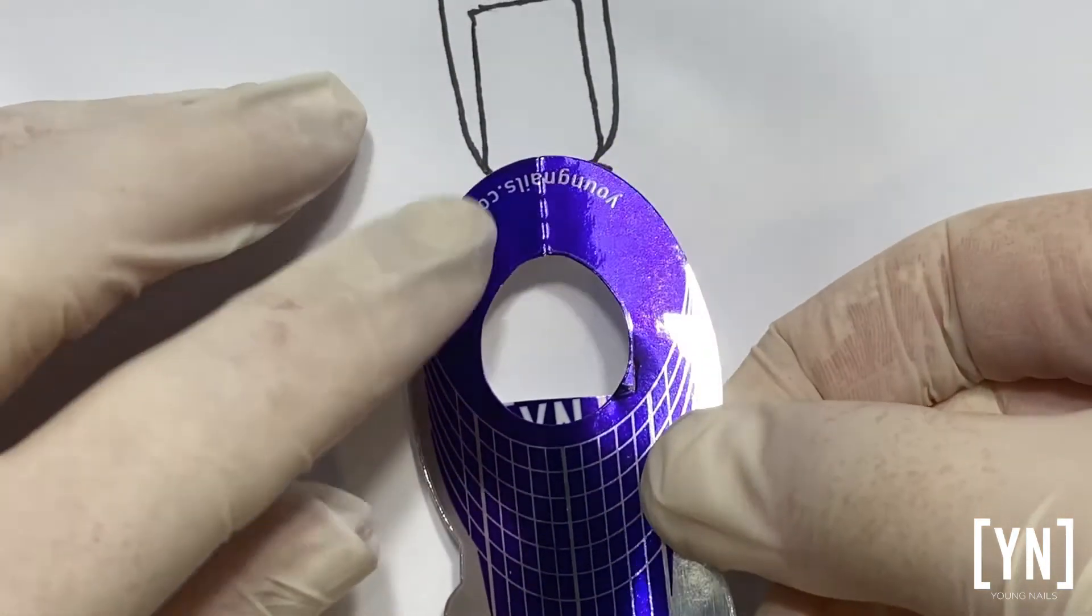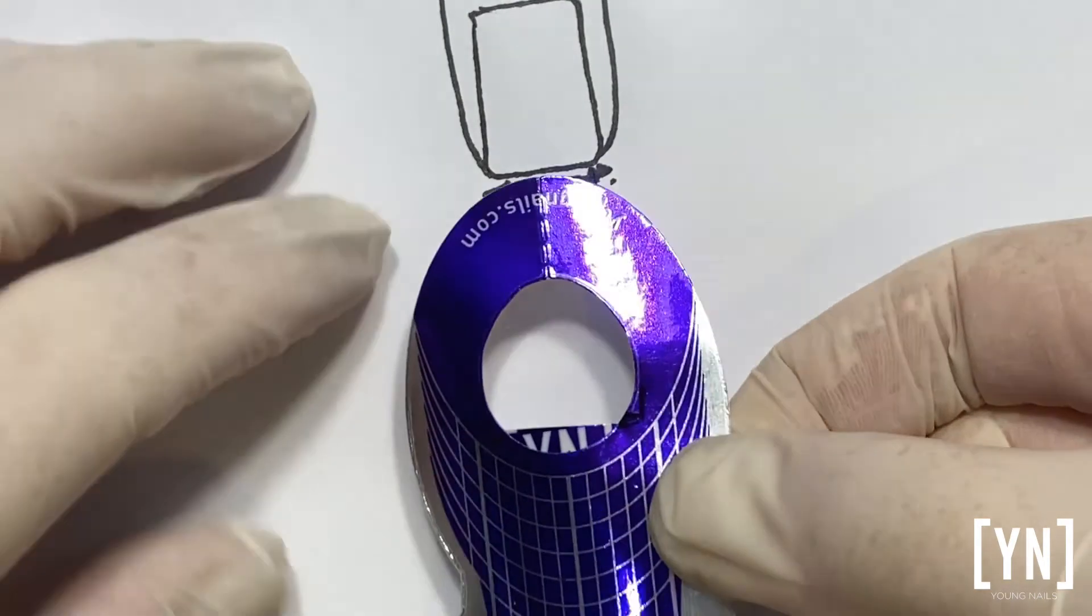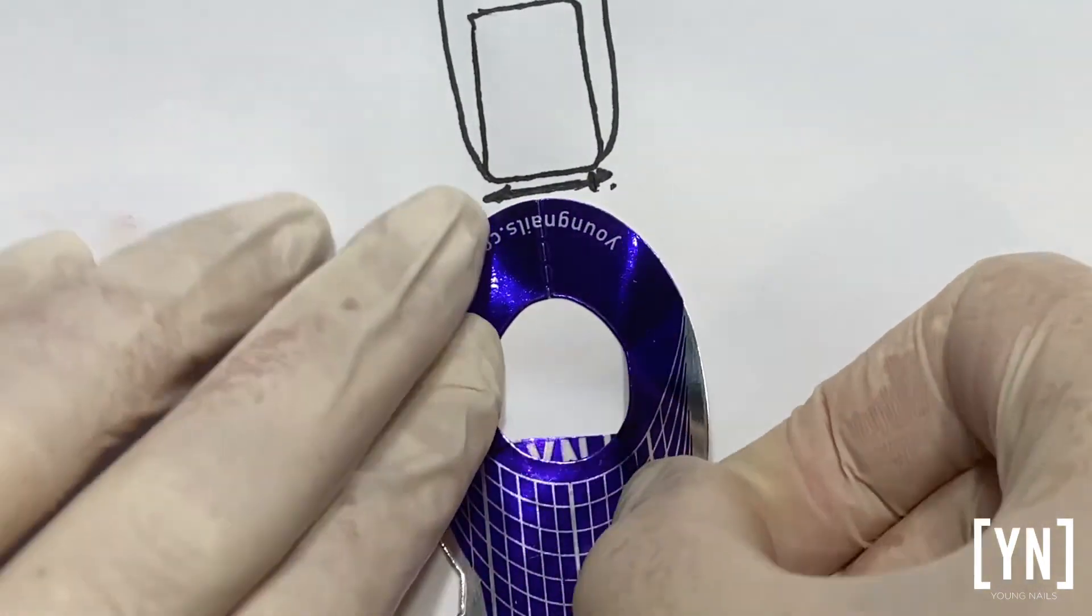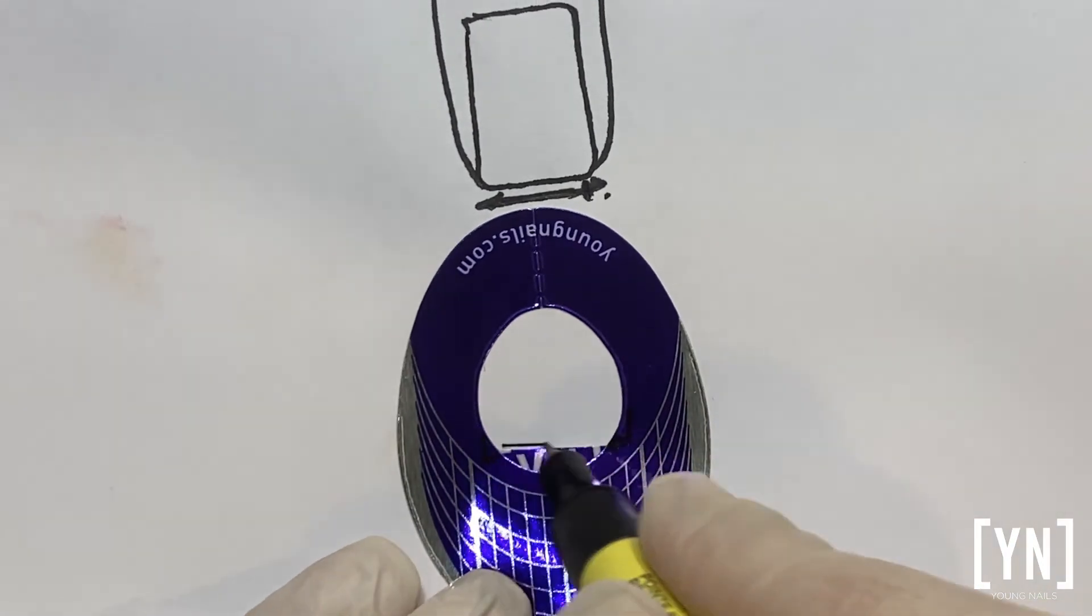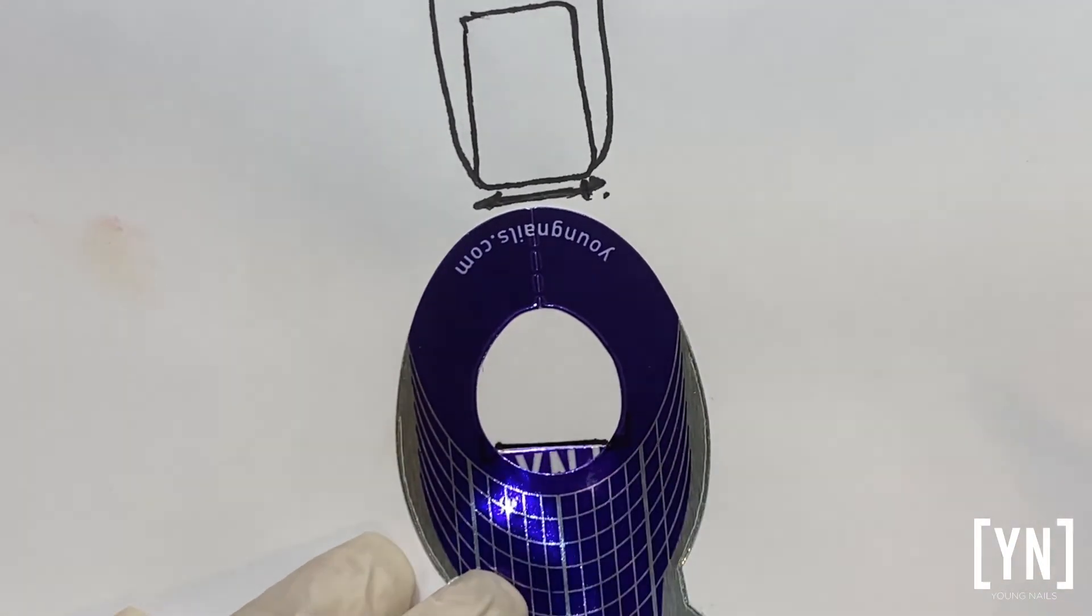So if somebody's got a very straight nail in the front, just make your sculpture form straight in the front as well, and this way you will have a perfect fit.